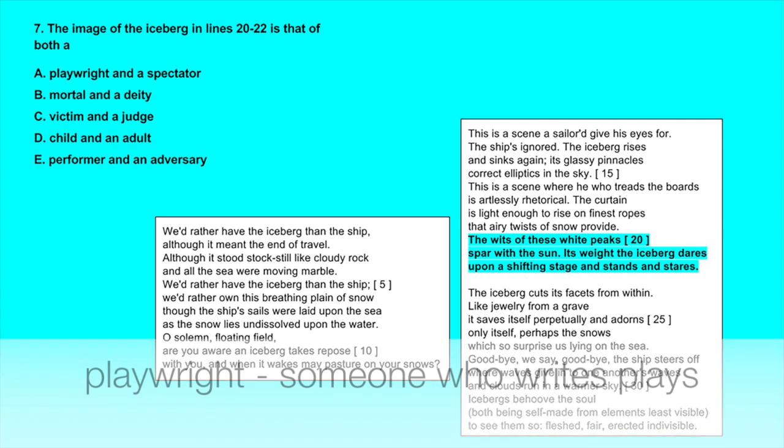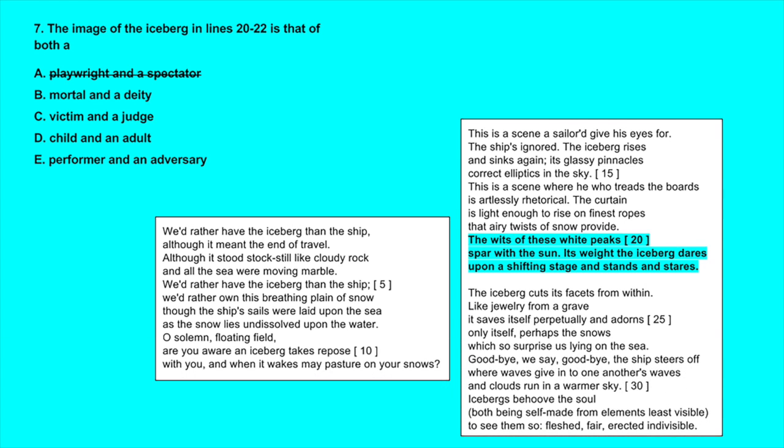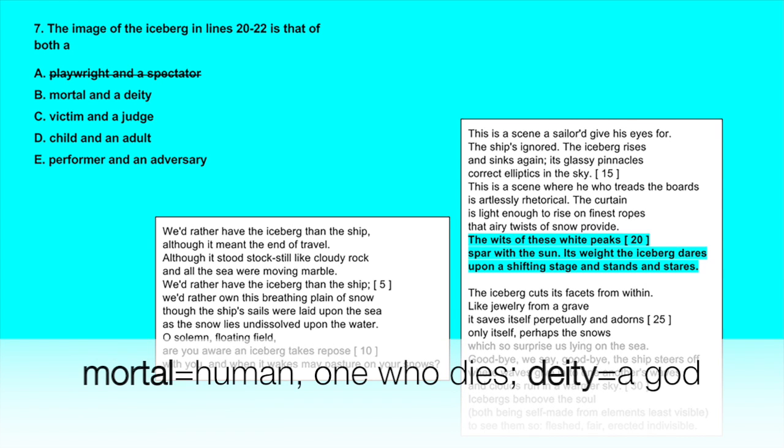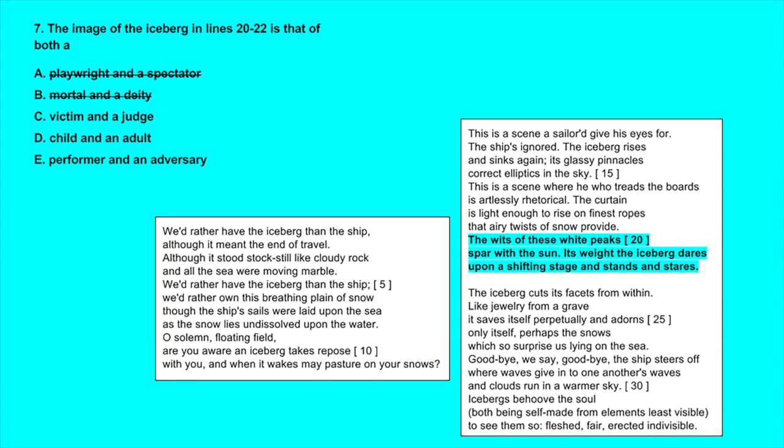The iceberg is on the stage but a playwright is the one who writes a play, not the actor, so eliminate A. B, a mortal and a deity - this doesn't fit, we can't support it, so cross out B. C, a victim and a judge - again this doesn't fit, there isn't anything to make us think that there is a victim or a judge here, so no. D, child and an adult - same here, there's no support for this at all.